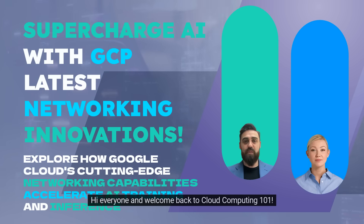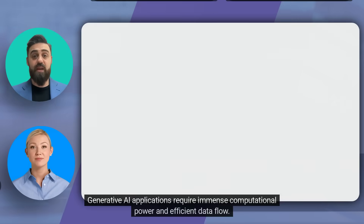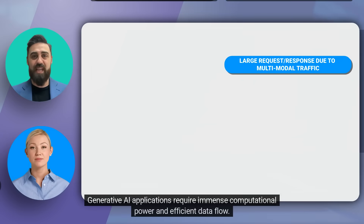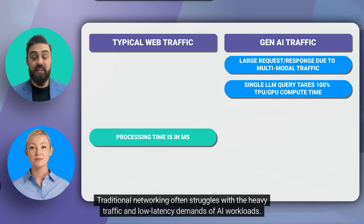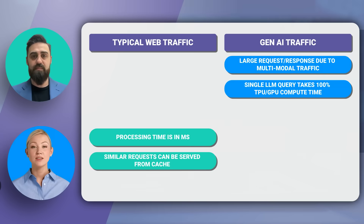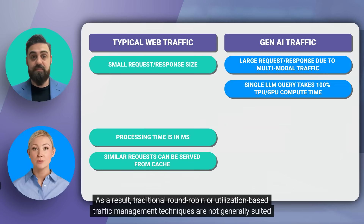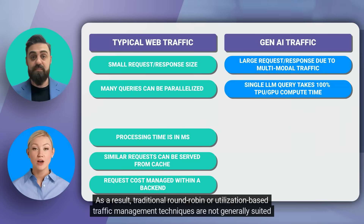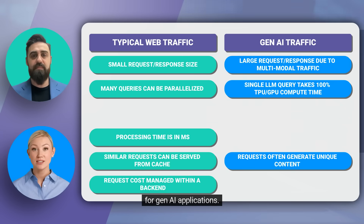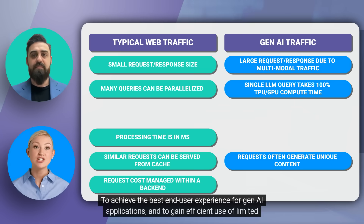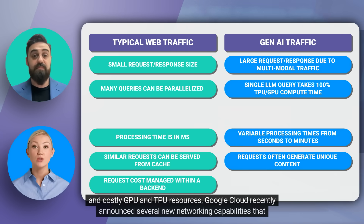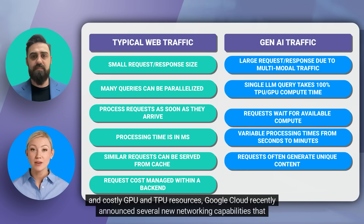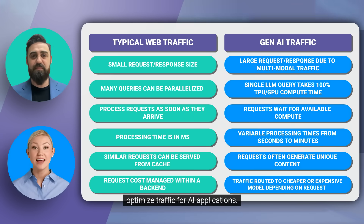Hi everyone and welcome back to Cloud Computing 101. Generative AI applications require immense computational power and efficient data flow. Traditional networking often struggles with the heavy traffic and low latency demands of AI workloads. As a result, traditional round-robin or utilization-based traffic management techniques are not generally suited for Gen AI applications. To achieve the best end-user experience and efficient use of limited and costly GPU and TPU resources, Google Cloud recently announced several new networking capabilities that optimize traffic for AI applications.